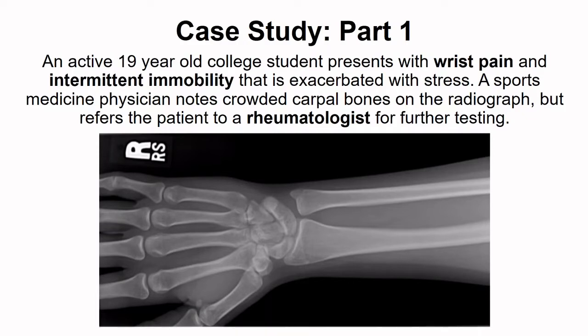The patient here is an active 19-year-old college student with wrist pain and intermittent immobility. That immobility is exacerbated by stress. They explain that some days it hurts to flex or extend the wrist at all, and it's definitely affecting their quality of life.